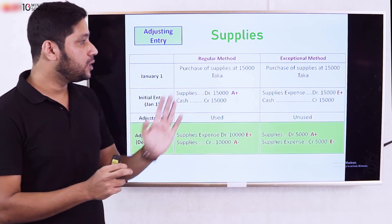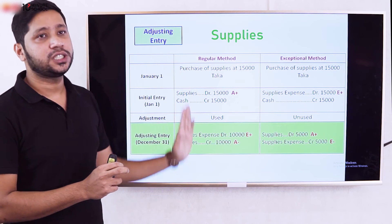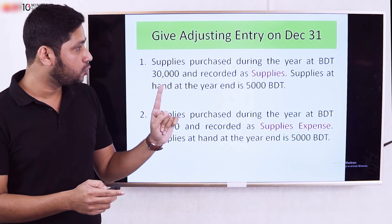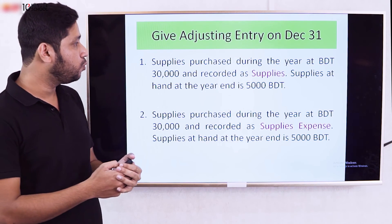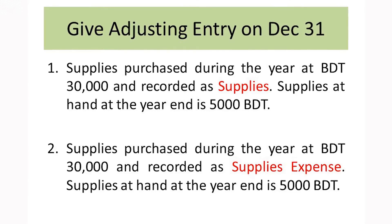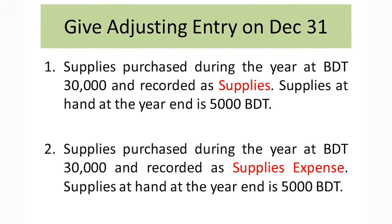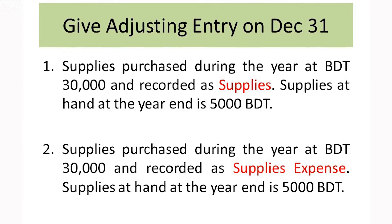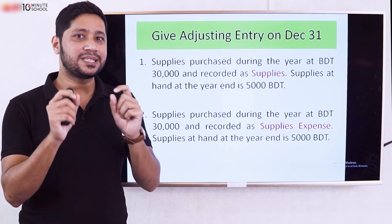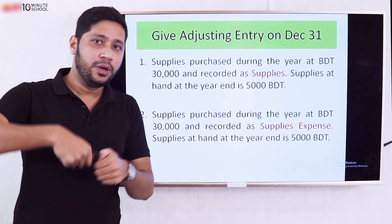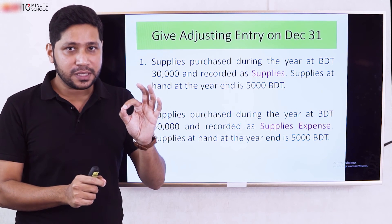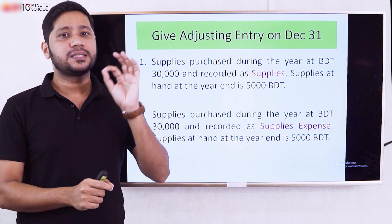If we have a prepaid expense for supplies, the first scenario is: supplies purchased during the year totaling $30,000 and recorded as Supplies — meaning the asset was initially recorded. So in the adjusting entry, the asset decreases and the expense increases.